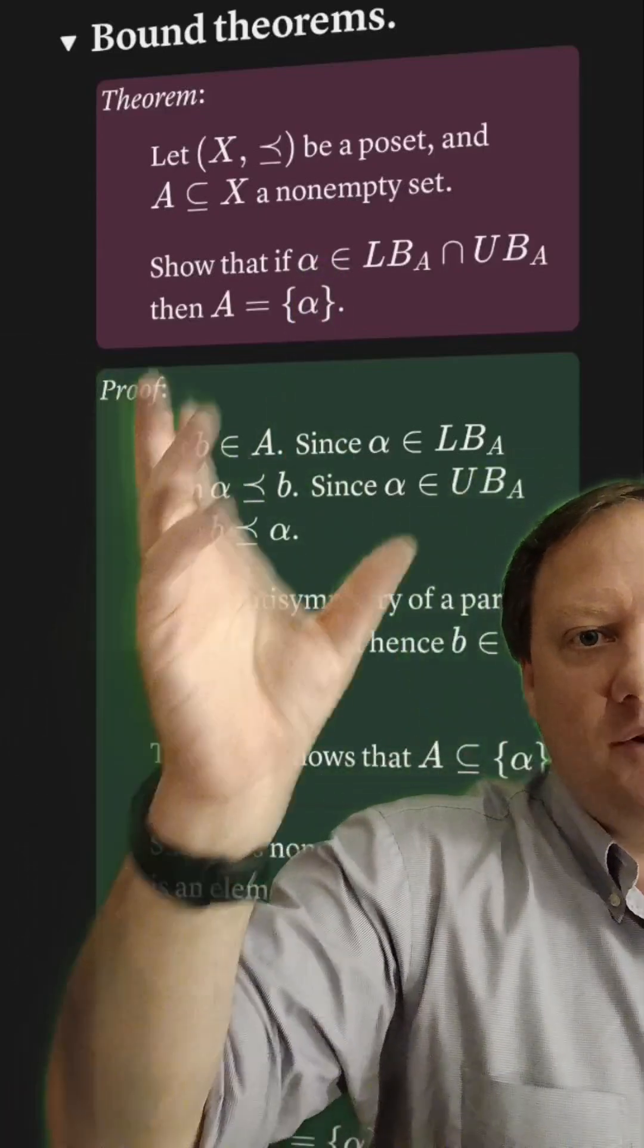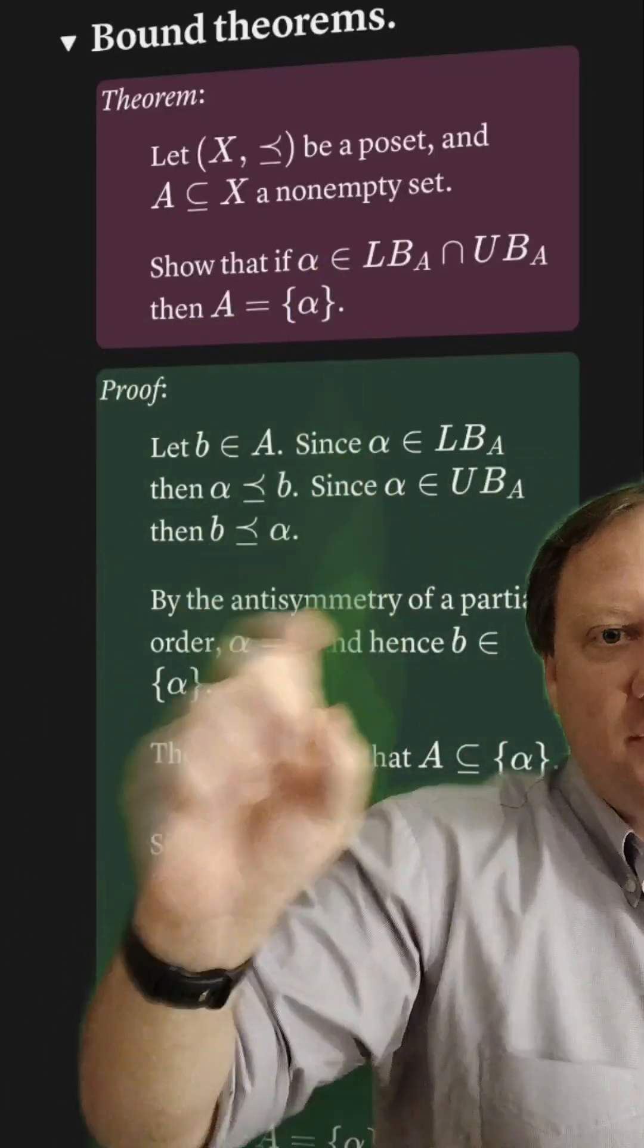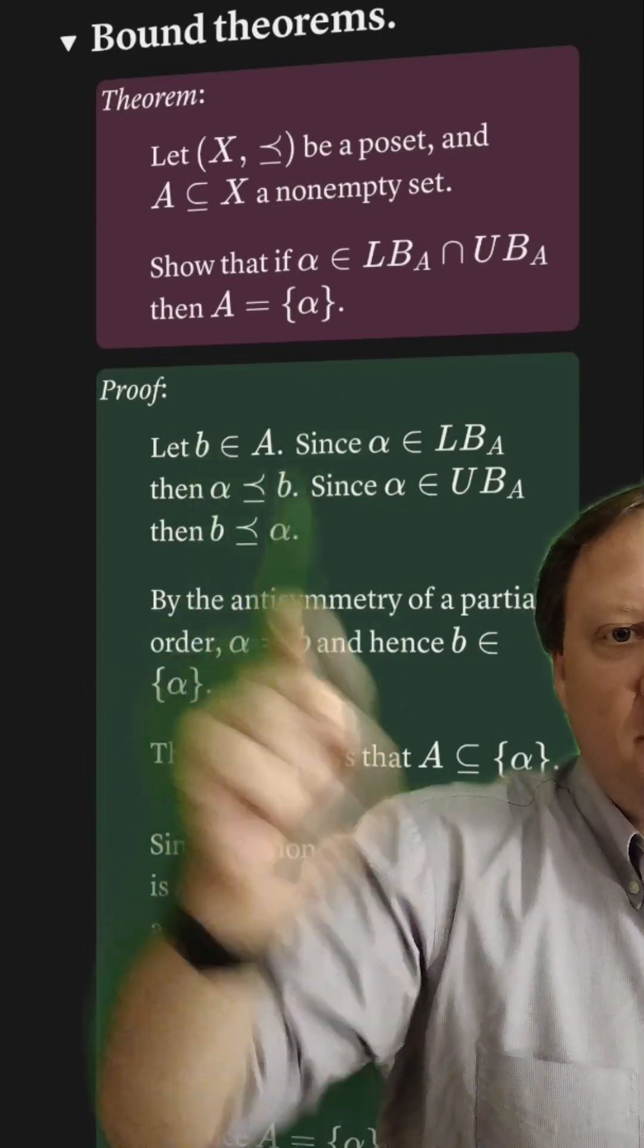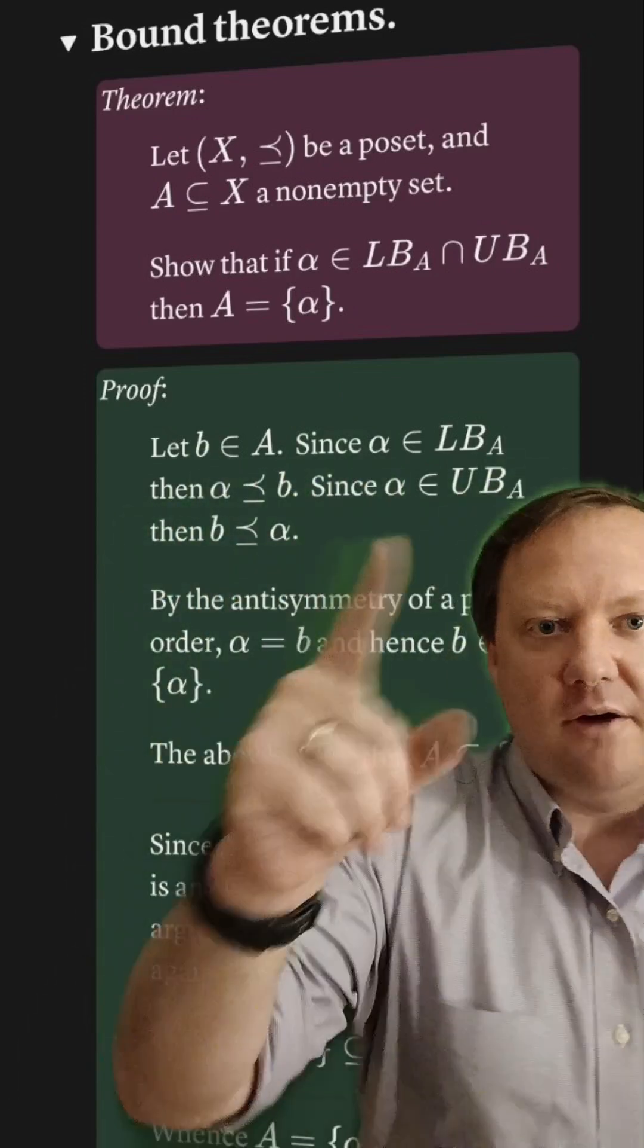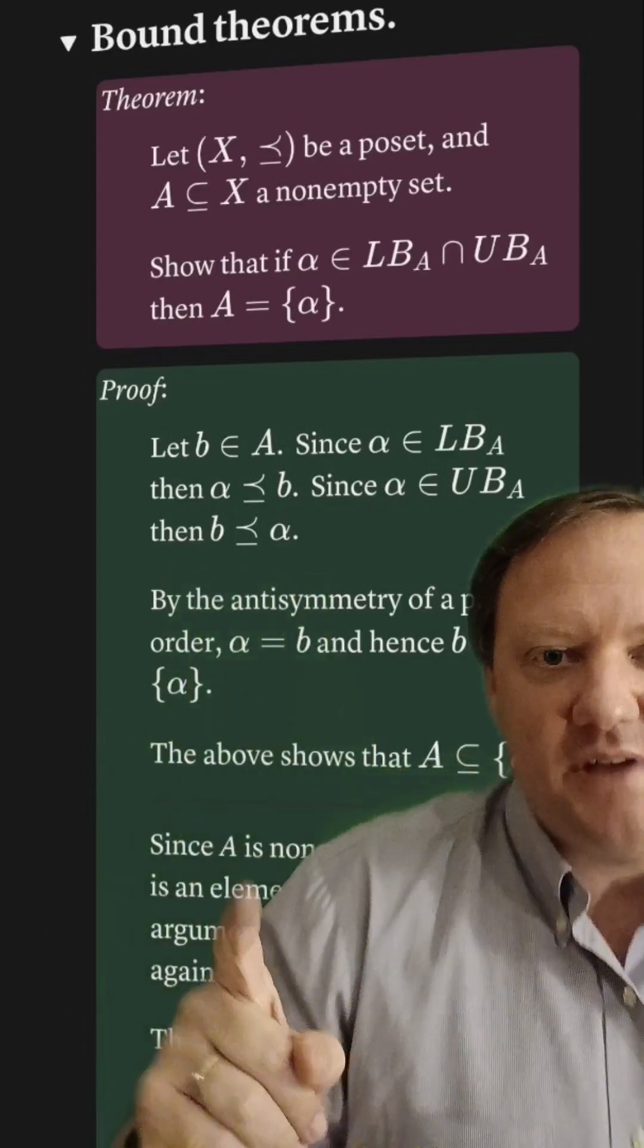Now I'm going to be very formal about this and show that A is a subset of the singleton, so let b be any element of A. Because alpha is a lower bound, it precedes b. Because alpha is an upper bound, then b precedes alpha.